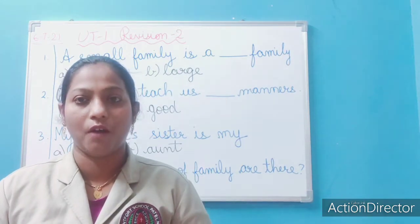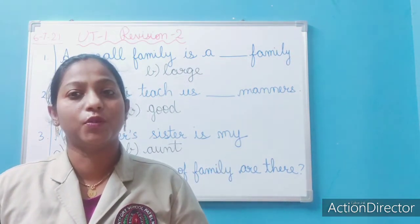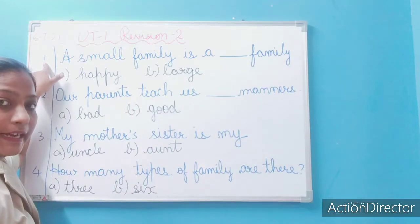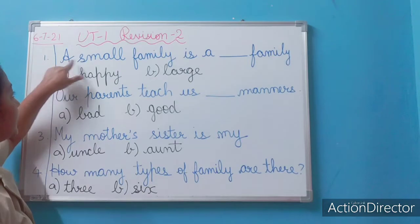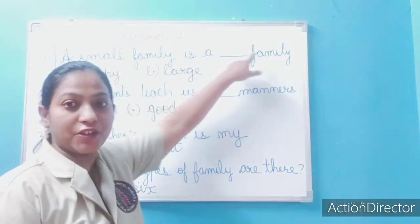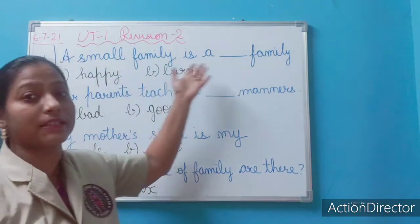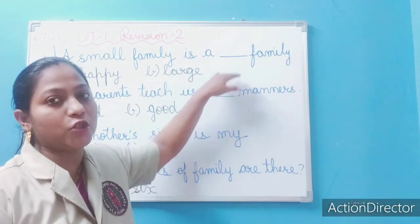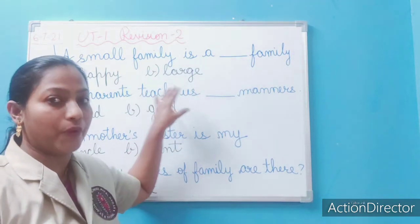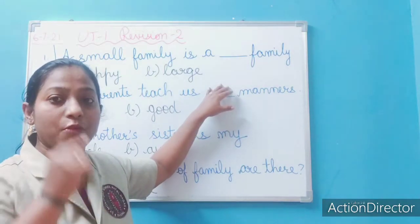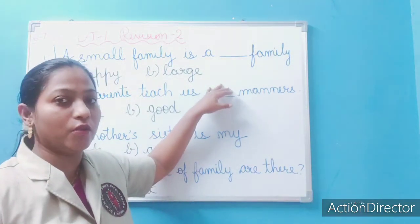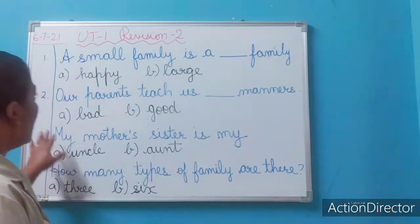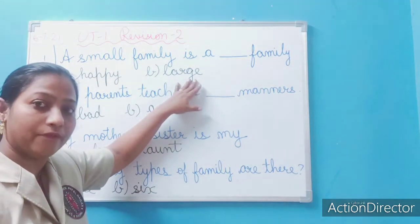Let's begin with the revision test. Question 1: A small family is a blank family. You will be getting three to four options in the paper. Right now you just have to write the answer; in the exam you have to tick the correct option. The options are 'happy' or 'large' — so what is the correct answer? Write it down.